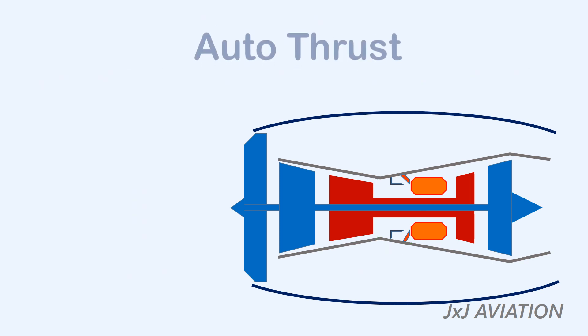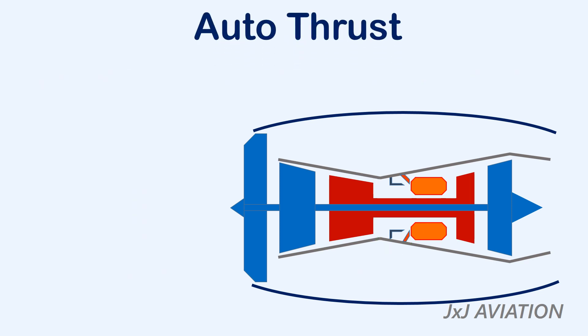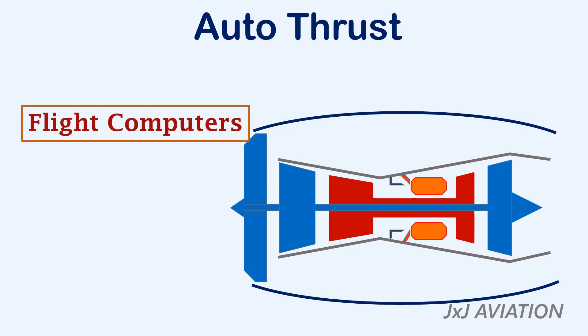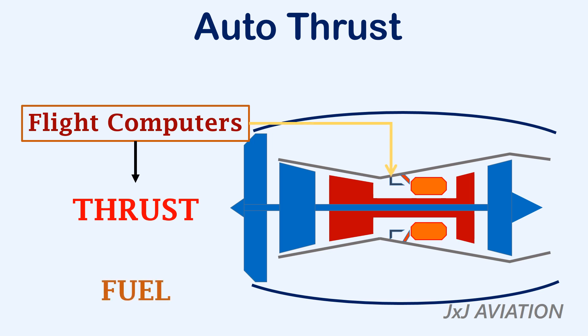Now we will look at the autothrust function on the engine, which may also be called autothrottle. Here, the aircraft's flight computers control the amount of thrust produced by the engine by adjusting the fuel flow into the combustion chamber. An increase in fuel flow will increase the thrust produced, and a decrease in fuel flow will reduce the thrust produced.